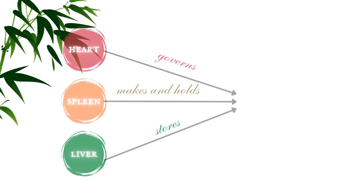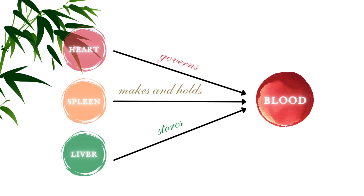Of all the above organs, however, the heart, spleen, and liver are the most important ones in relation to blood. The heart governs blood. The spleen contains and holds blood in the blood vessels. And the liver stores blood.